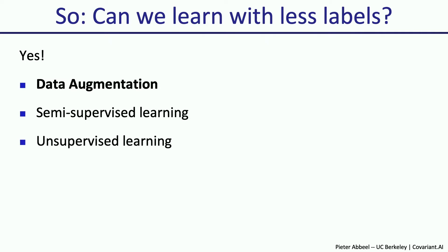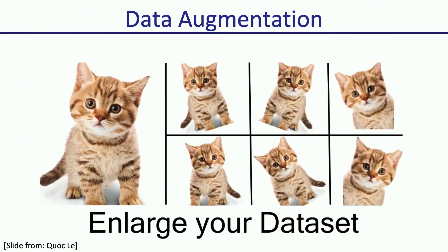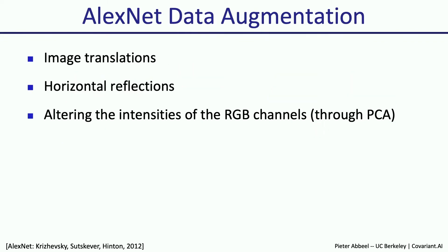Let's first look at data augmentation. Data augmentation is about enlarging your dataset. Maybe you collected one image of a cat — instead of training on just that one image, you modify it by rotating it in various ways. It's still a cat. You can write some Python code that rotates the image a little bit — you don't have to annotate these new images. You annotate an image once and then generate many other images from it. In AlexNet — the big breakthrough in 2012 — the data augmentation consisted of image translations, horizontal reflections, and altering the intensities of the RGB channels.